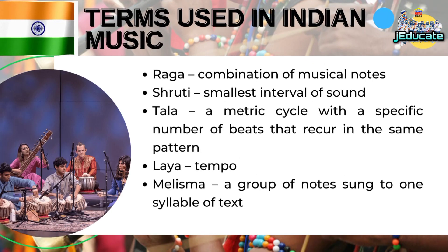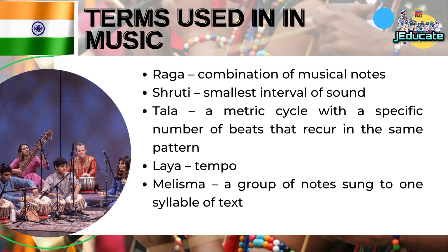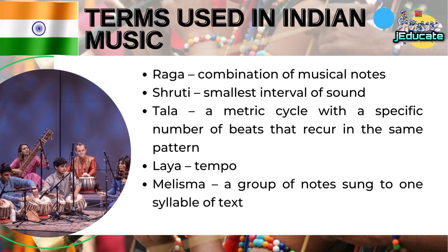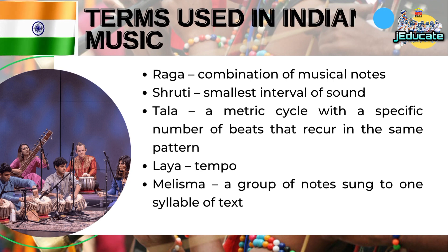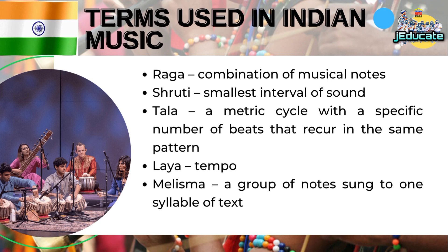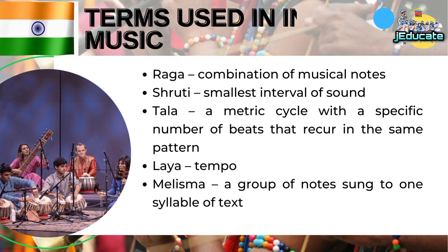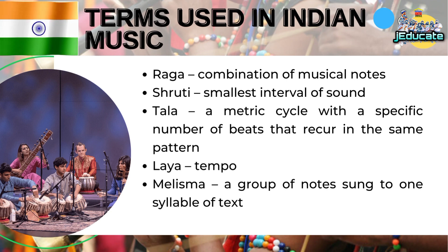Terms used in Indian music. Raga: combination of musical notes. Shruti: smallest interval of sound. Tala: a metric cycle with a specific number of beats that recur in the same pattern. Laya: tempo. Melisma: a group of notes sung to one syllable of text.